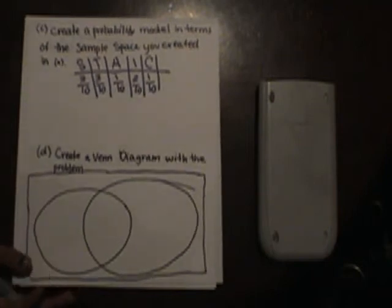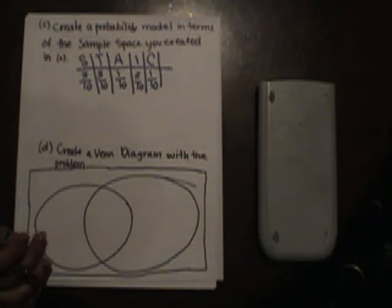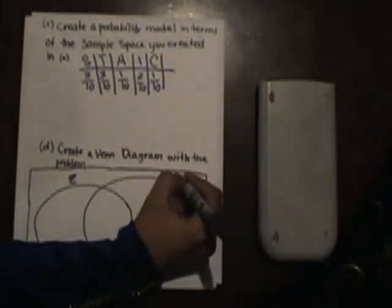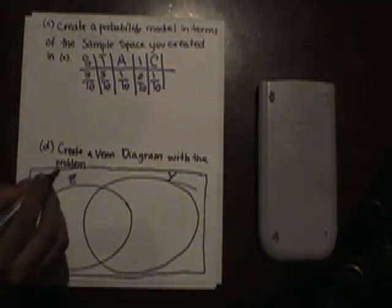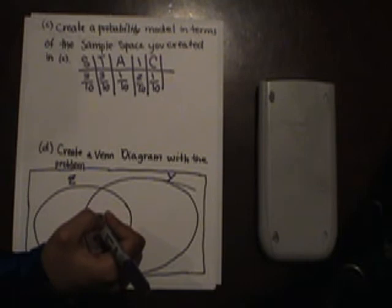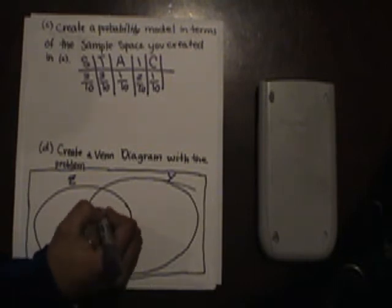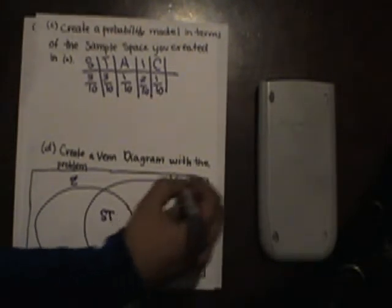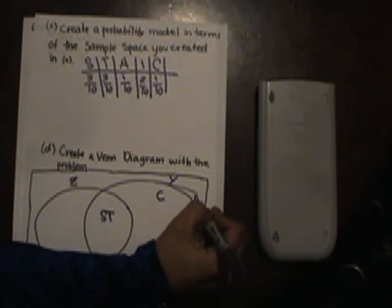The next question: create a Venn diagram with the problem. We would have Z on one side and Y on the other side. Anything in Z represents letters in the second half of the alphabet. S and T fall under both categories, so S and T go in the middle overlap. C goes in category Y only. And A and I go on the outside.